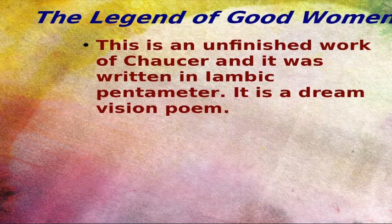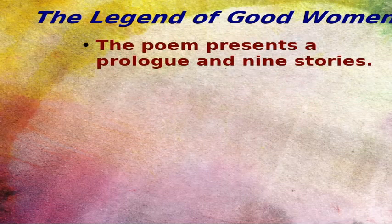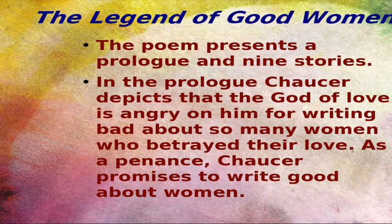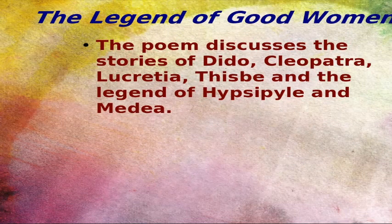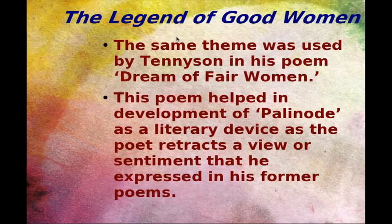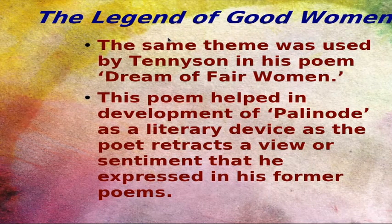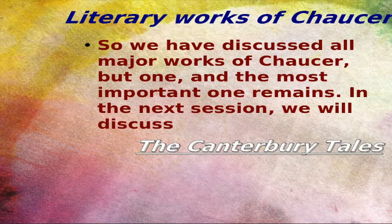The Legend of Good Women is the next important work of Chaucer. It is an unfinished work written in iambic pentameter and is a dream vision. It presents a prologue and nine stories. In the prologue, the God of Love is angry at Chaucer for writing about so many women who betray men. As penance, Chaucer was to write about good women. The stories of Dido, Cleopatra, and Lucrece are discussed in the poem. Tennyson used the same theme in his poem A Dream of Fair Women. This poem leads to the development of the palinode as a literary device, where the poet retracts a view or sentiment expressed in a former poem — meaning he shifts to a completely new theme.